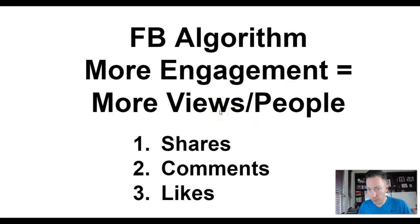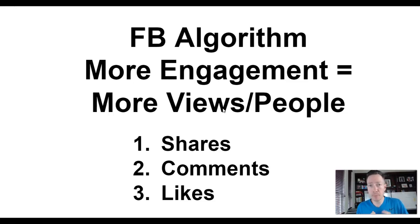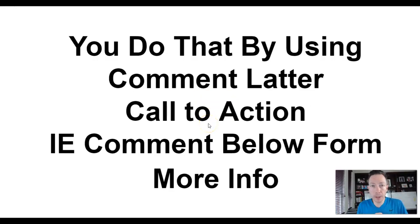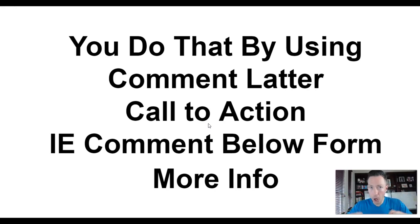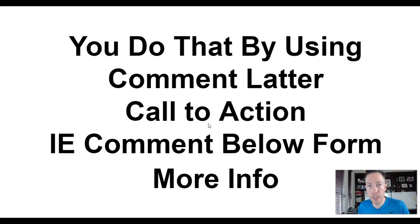There are three main components: shares, likes, and comments. Shares are your most valuable, then comments, then likes — that's how Facebook determines relevance and shares your post to more people. The way we do this is by using a comment ladder call to action. You've probably seen this before — someone says 'comment below for more information.' We're actually inviting our audience to engage with our post to create that engagement and in turn get shown to more people.